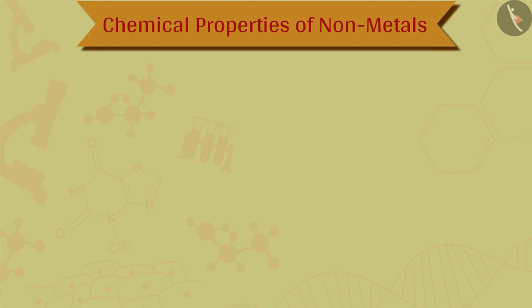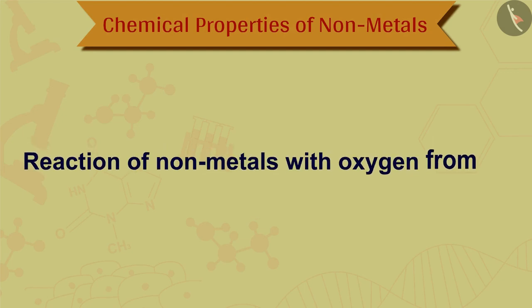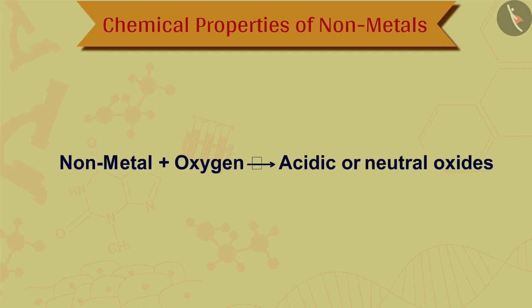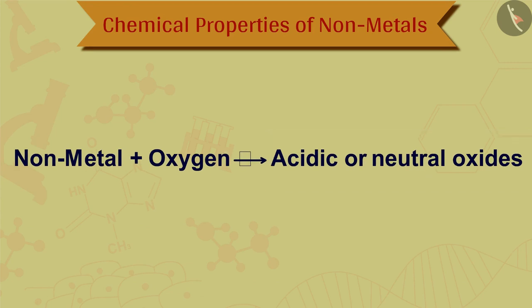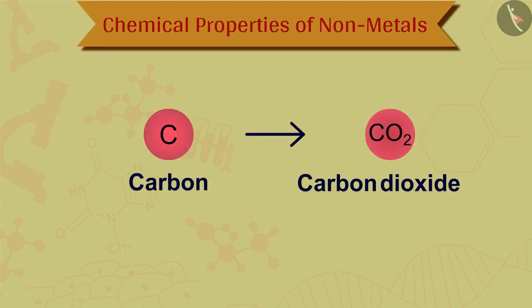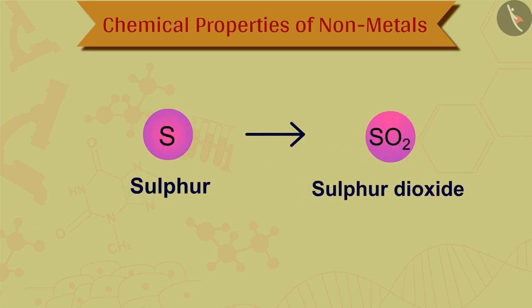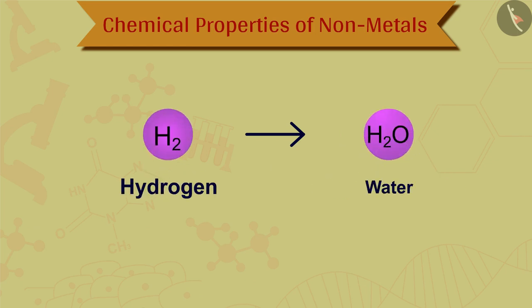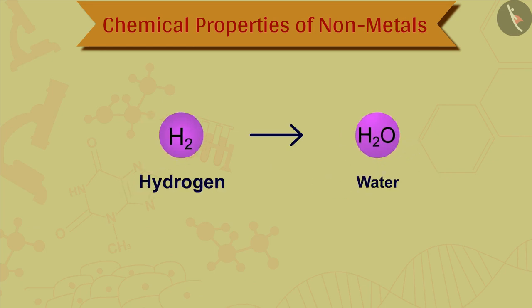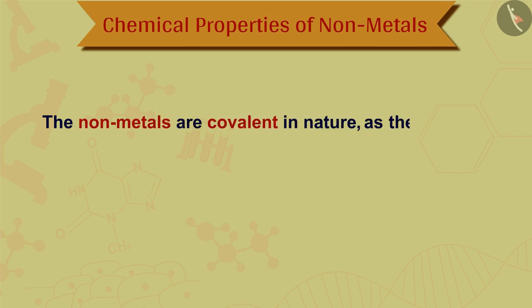The first chemical property of nonmetals is the reaction of nonmetals with oxygen from air. Nonmetals react with oxygen to form acidic oxides or neutral oxides. Carbon forms an acidic oxide, carbon dioxide. Sulfur forms an acidic oxide, sulfur dioxide. Hydrogen forms a neutral oxide, water (H2O). Nonmetals are covalent in nature as they are formed by the sharing of electrons.